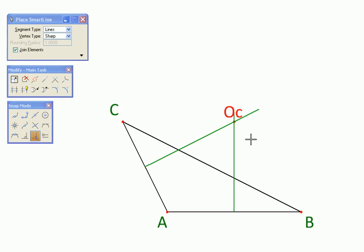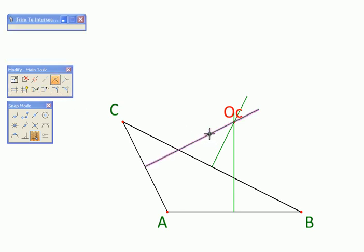We don't have to prove that this is a unique center, but just to hammer home that point I am going to draw the third perpendicular bisector and see, it goes through the same point as expected. So let us just trim them, making this a nice figure. This is how they meet.